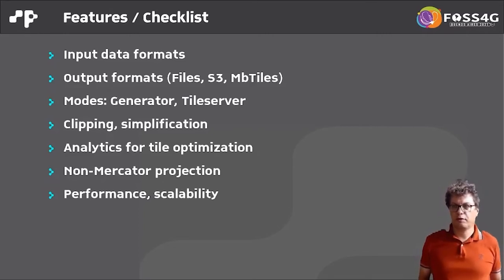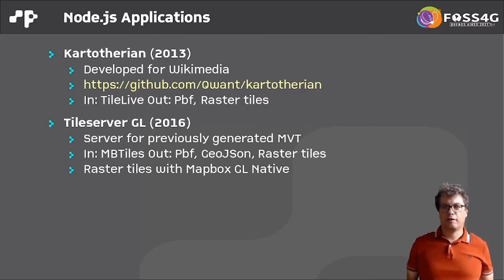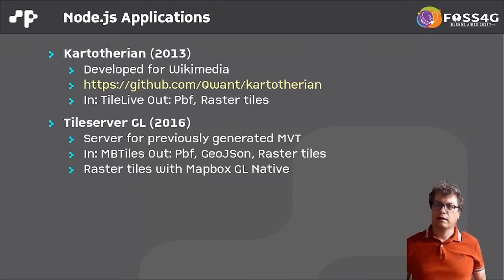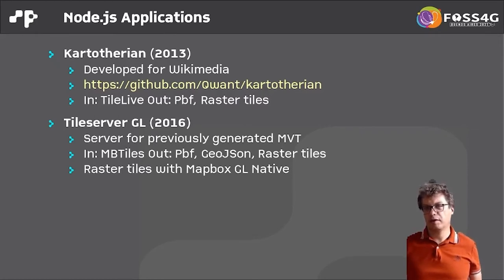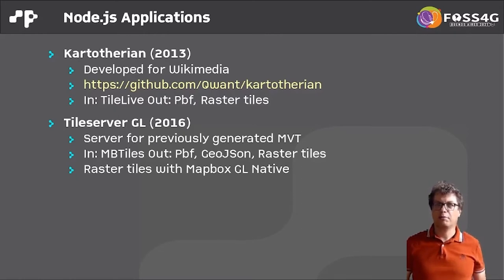The first group of vector tile servers are Node.js based applications. One of the first is Kartotherian, first published in 2013, developed for use with Wikimedia and now used and developed in Qwant Maps, which belongs to the Qwant search engine. The input is Tile-Live, which is a pipeline for different input formats, and the outputs are PBF files or raster tiles.